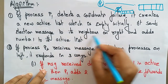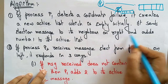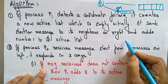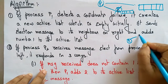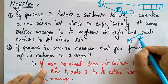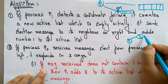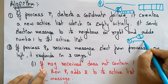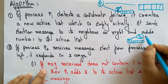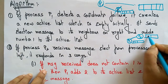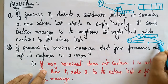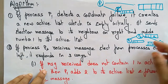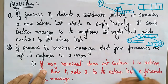P1 sends an election message to its neighbor on the right and adds its number to the active list. The process to the right of P1 is P2. P1 maintains an active list with its own number, then as the message moves right the list becomes one and two, then one, two, and three — each process adds its number to the active list as the message circulates.